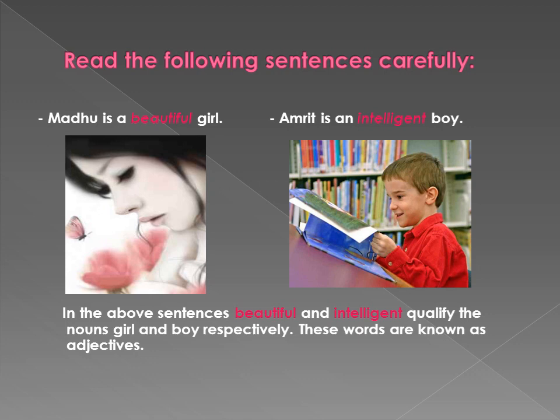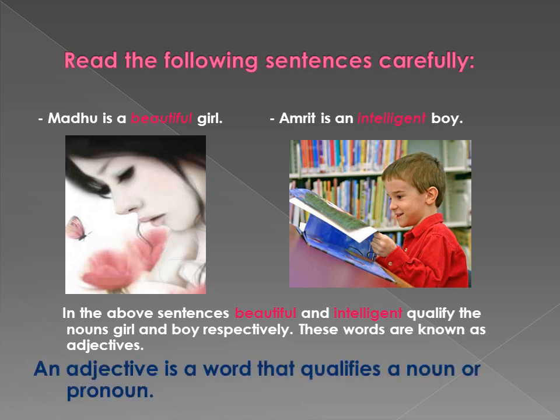In the poem 'The Ice Cream Man', the underlined words beautiful and intelligent are examples. These words tell the quality of the noun — for example, the girl is beautiful, the boy is intelligent. The words that qualify a noun or pronoun are called adjectives. Qualify means tell the quality of the noun.